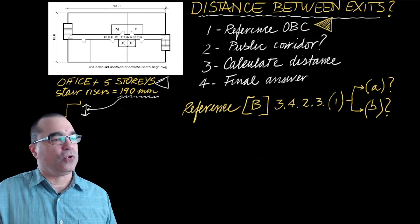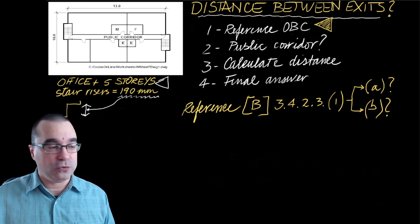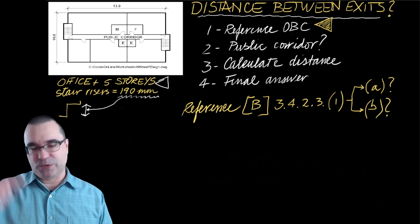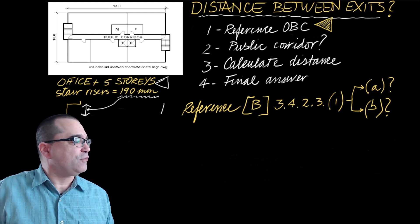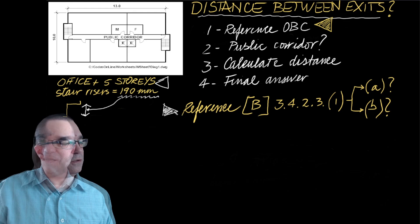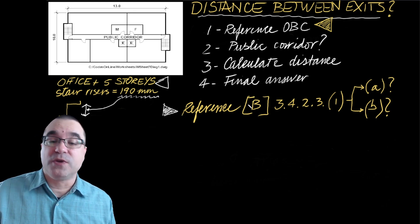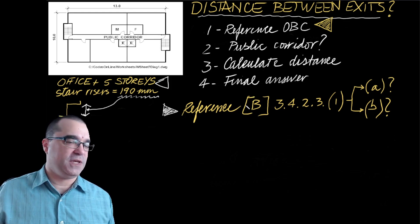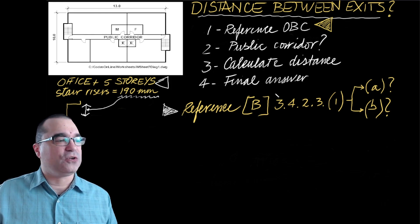So let's start with step number one. We have to reference the correct portion of the Ontario Building Code. Based on the lecture you just watched, we are looking to use this reference right here, which is going to be either clause 3.4.2.3(1)(a) or (1)(b) under Division B of the Ontario Building Code.